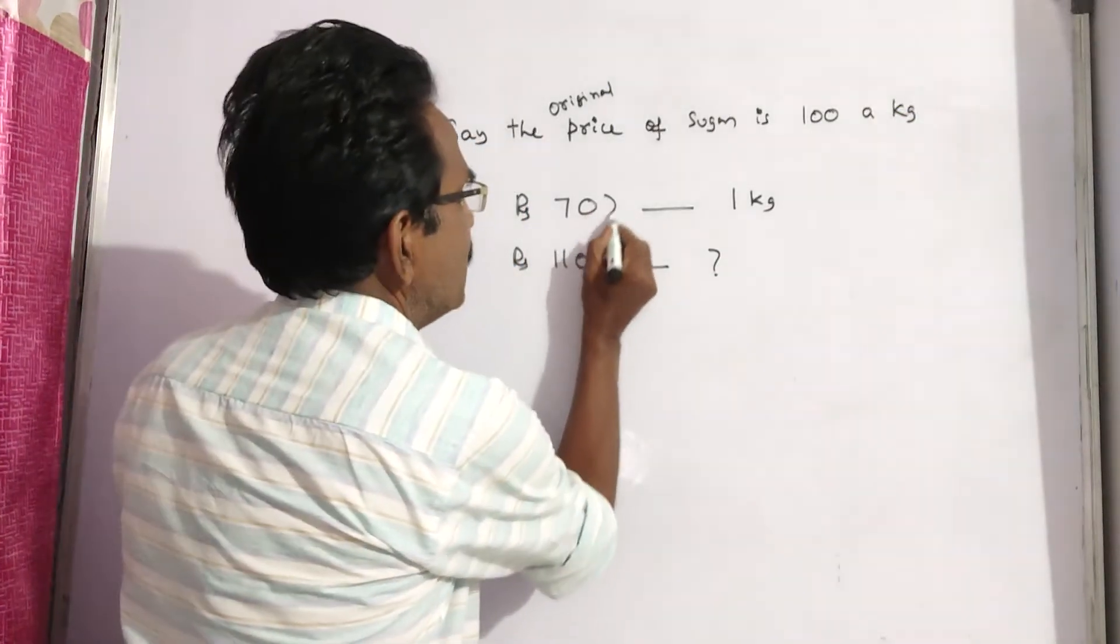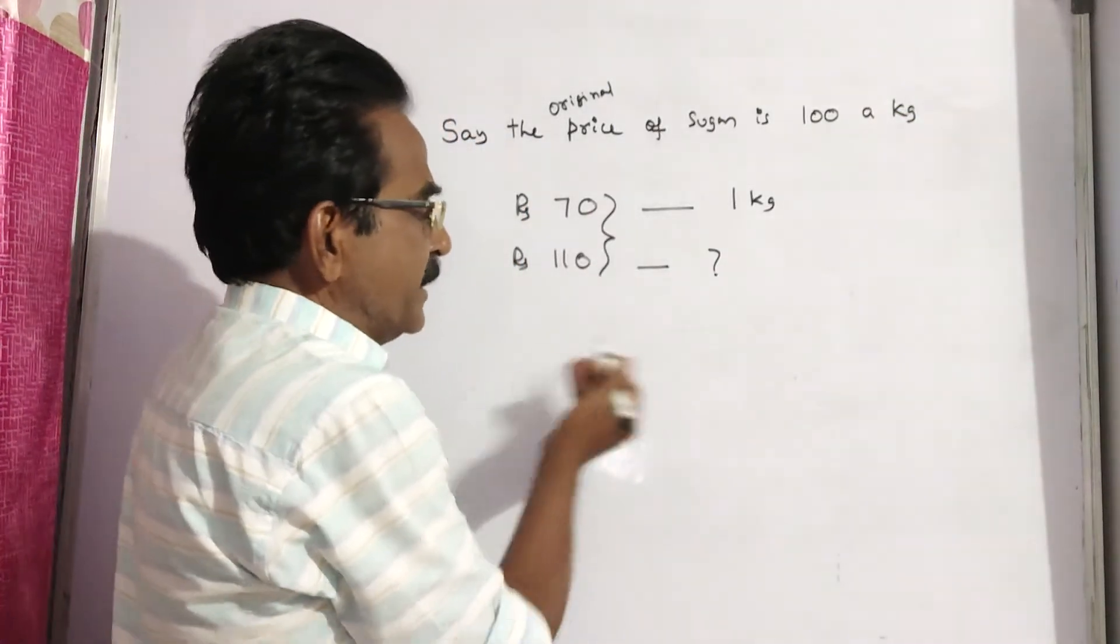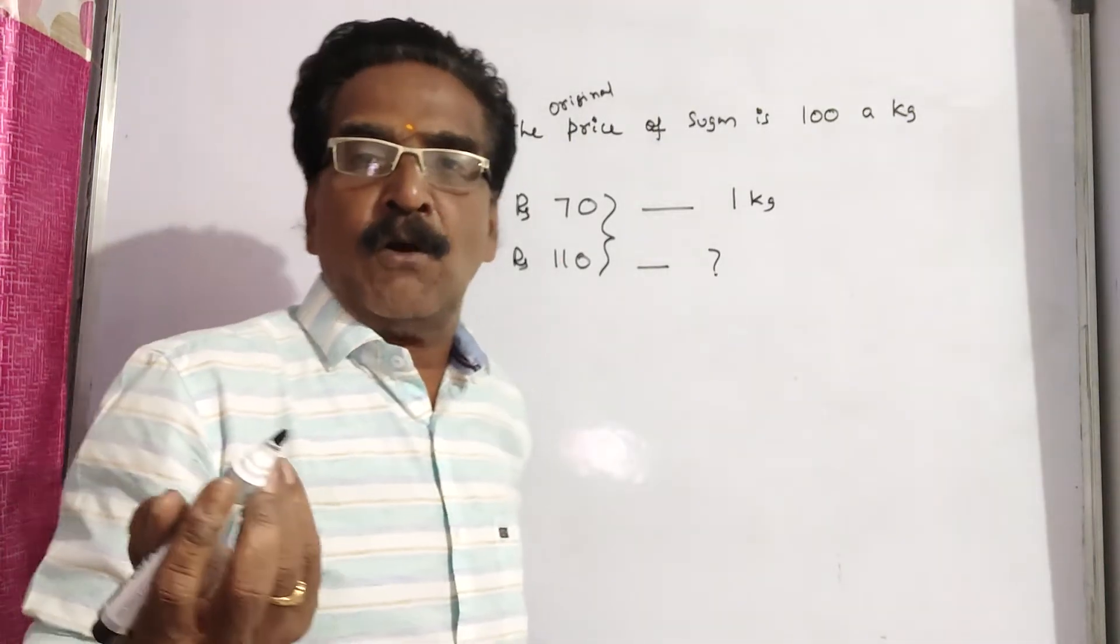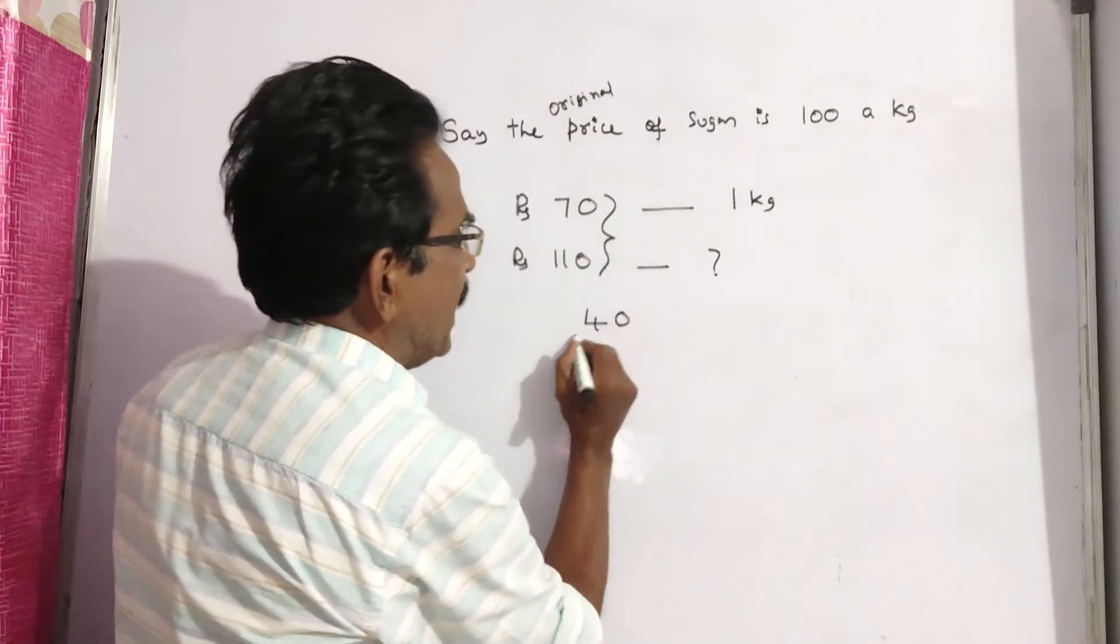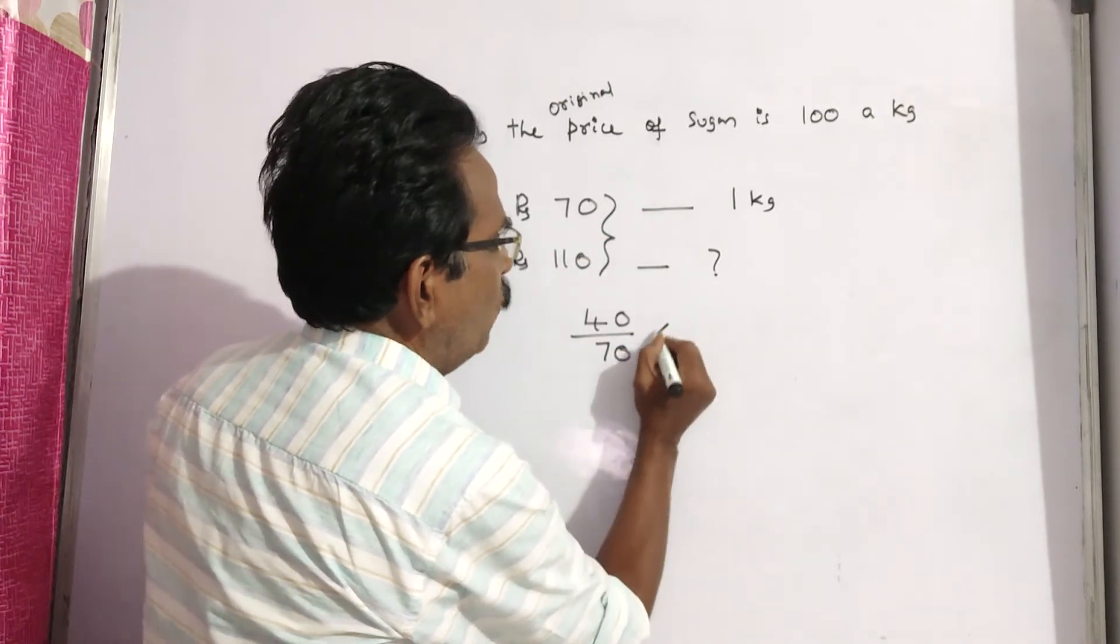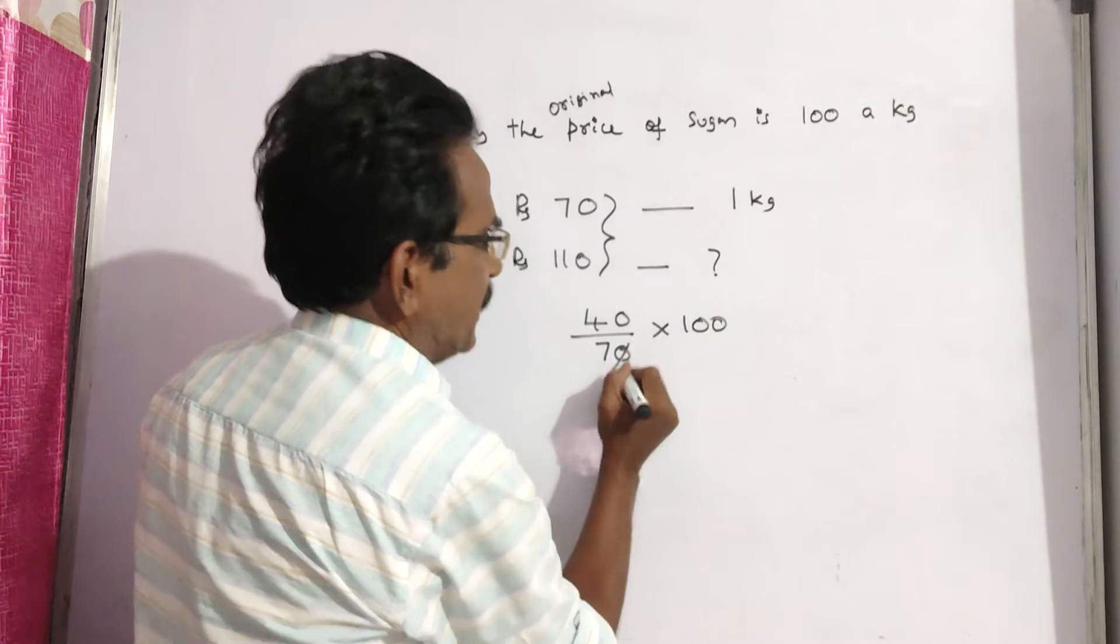So what is the increase? Increase percent is - we know how to find the increase percent. Increase by original, by original into 100. This gives increase percent.